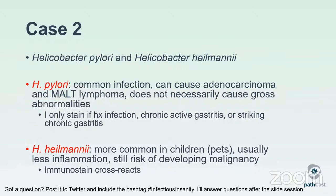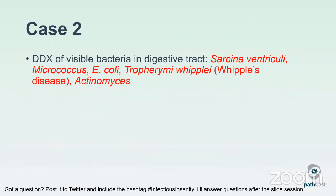The differential for visible bacteria in the digestive tract includes Sarcina ventriculi, which occurs in the stomach in gastric outlet obstruction and is much larger than helicobacter; Micrococcus, which is smaller and may not be pathogenic; enteroadherent E. coli in the colon; Tropheryma whipplei (Whipple's disease), seen within foamy macrophages and usually requiring an immunostain or PAS stain; and Actinomyces, seen occasionally in the colon and even the gallbladder.